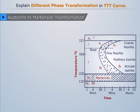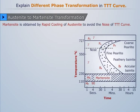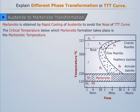Austenite to martensite transformation. Martensite is obtained by rapid cooling of austenite to avoid the nose of TTT curve. The critical temperature below which martensite formation takes place is the martensitic temperature.